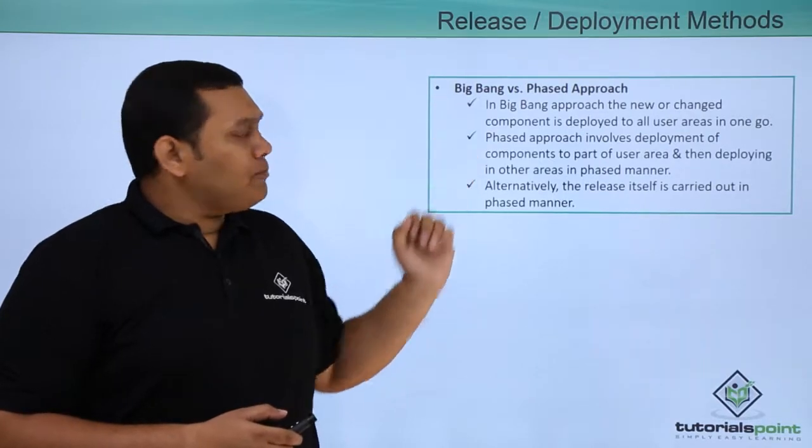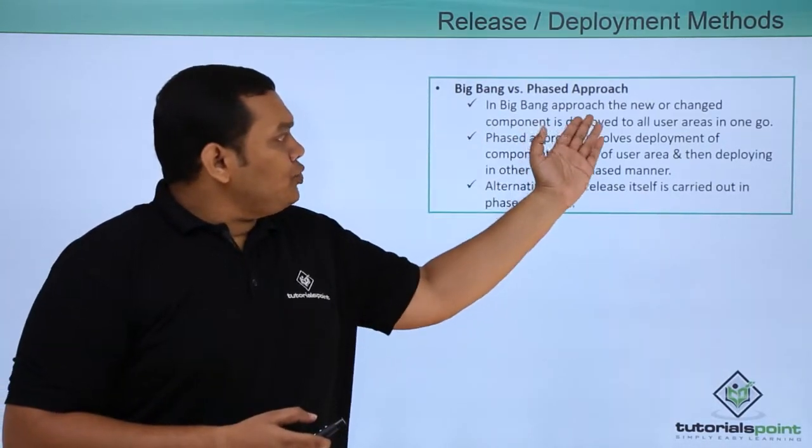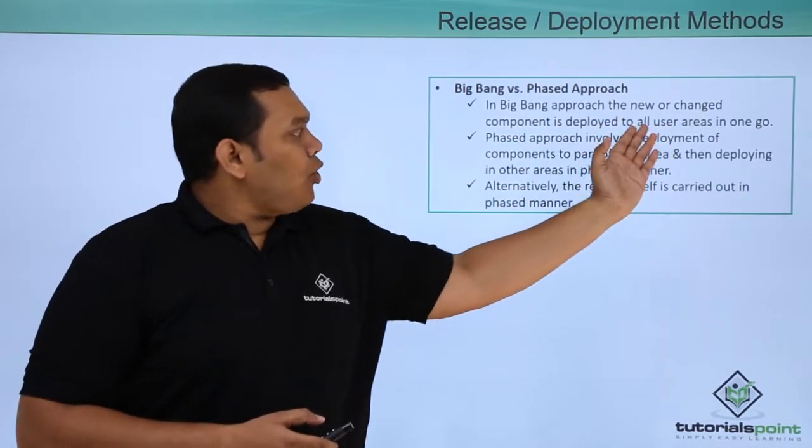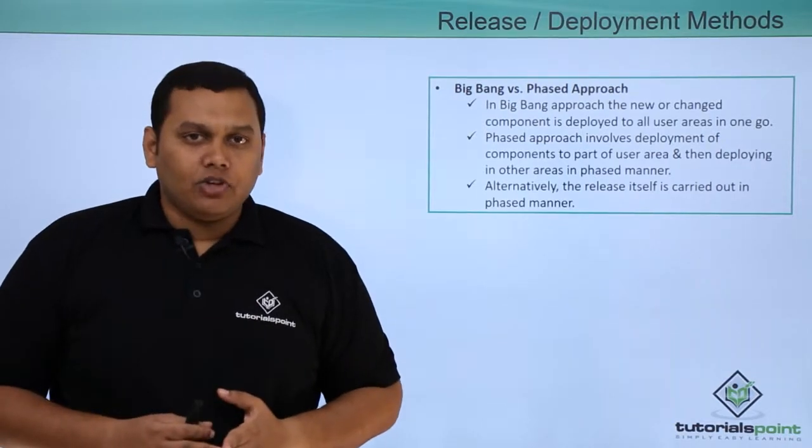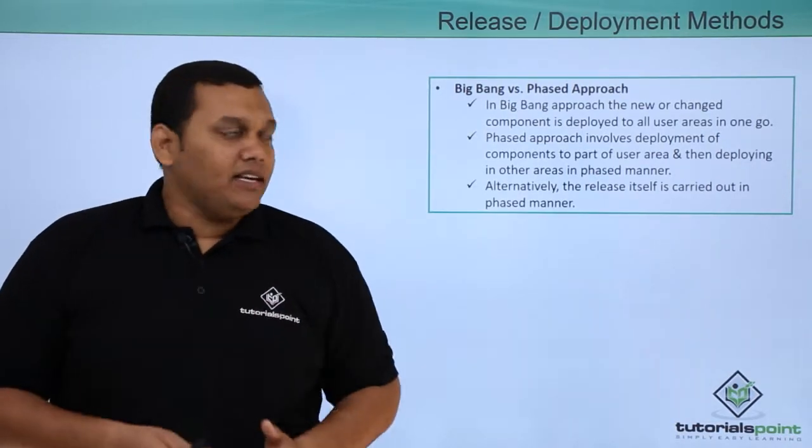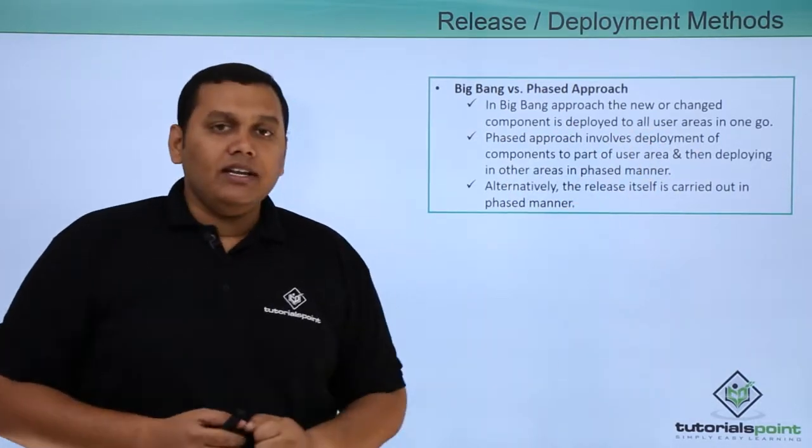The first one is Big Bang approach and the second one is phased approach. In Big Bang approach, the new or changed component is deployed to all user areas in one go. You can take an example of an antivirus software. By doing a package release, it can be deployed into all user target locations in one go.